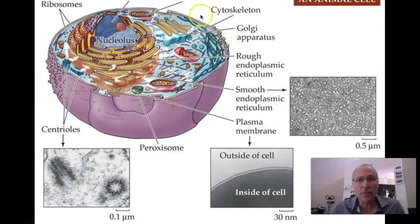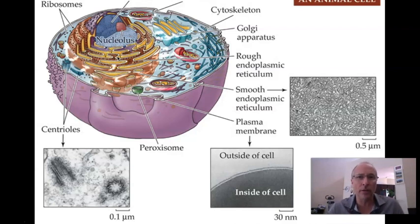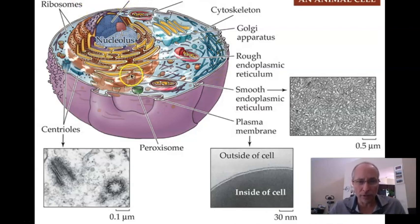Notice the connection between all these membranes on the inside. The nuclear membrane, the membrane forming the rough ER, the smooth ER, and the Golgi apparatus are all functionally connected. They're all part of what we call the endomembrane system — the connection of all these different membranous systems. The rough ER, smooth ER, and nuclear membrane are all physically connected; the Golgi apparatus is not physically connected, but functionally connected.